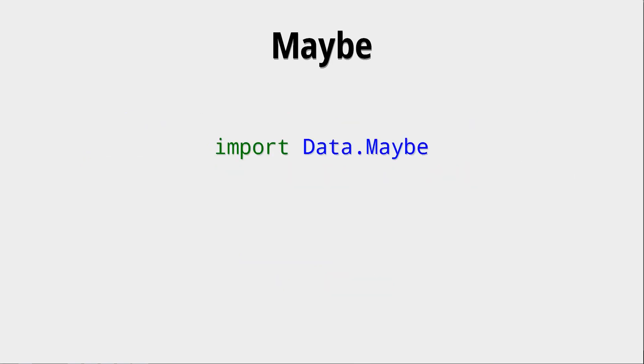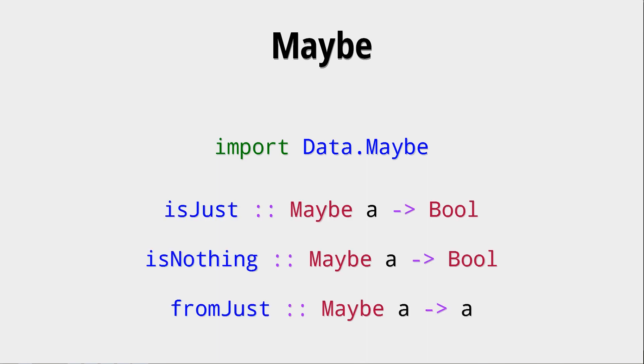There are some functions that we can use with this Maybe data type, and they can be imported from the Data.Maybe module. Three functions here are very important. isJust and isNothing check if a value is a Just or a Nothing constructor.